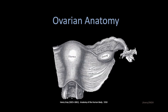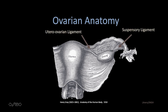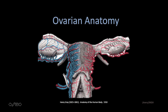Let's start with ovarian anatomy. Here we have the midline uterus and vaginal vault with a laterally positioned fallopian tube. The ovary is suspended laterally by the suspensory ligament and medially by the uterine ovarian ligament. The soft tissues of the meso-ovarium connect the ovary to the fallopian tube. The ovary is unique in that it derives a dual blood supply: laterally, the gonadal arteries feed the ovary, and branches of the uterine artery come from medial.